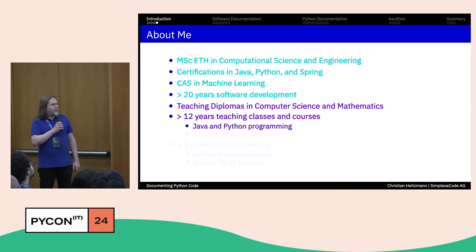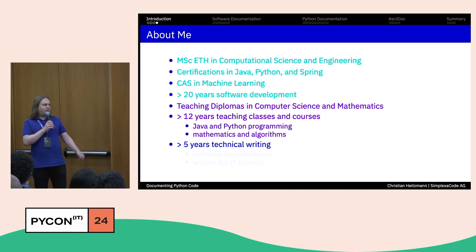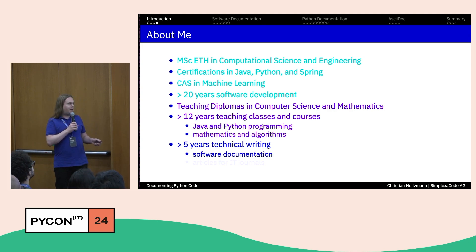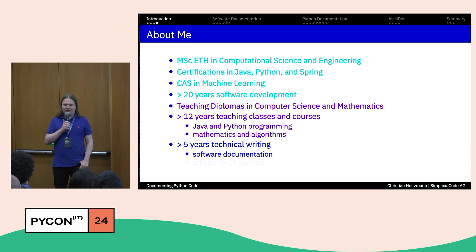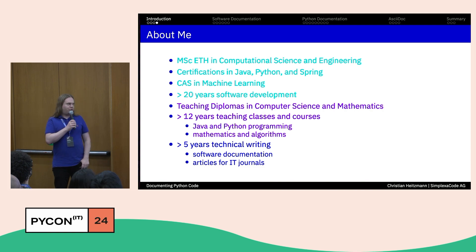My second career track is teaching — I have two teaching diplomas, one in computer science and one in mathematics, and I've been teaching classes and courses for more than 12 years in Java, Python programming, mathematics, and algorithms. Through my company PlexaCode I also offer technical writing, meaning I document software as a service for companies who don't do this — and there are many such companies. I also write articles for IT journals, mostly in German, but you can find all of them on my website.